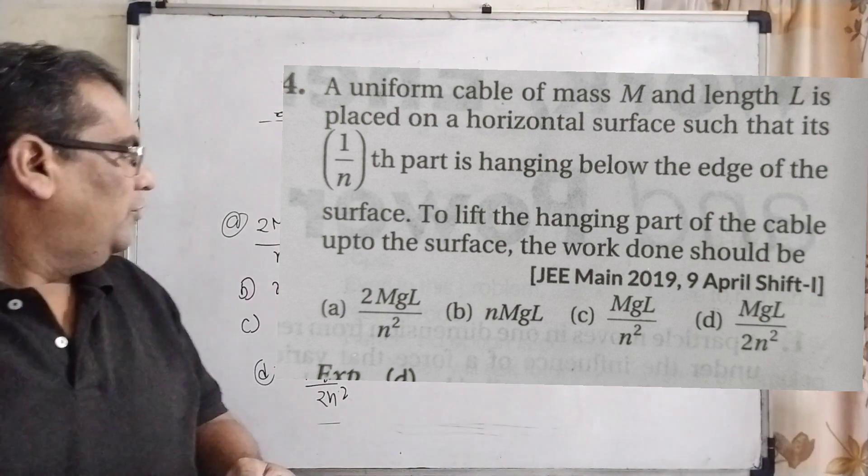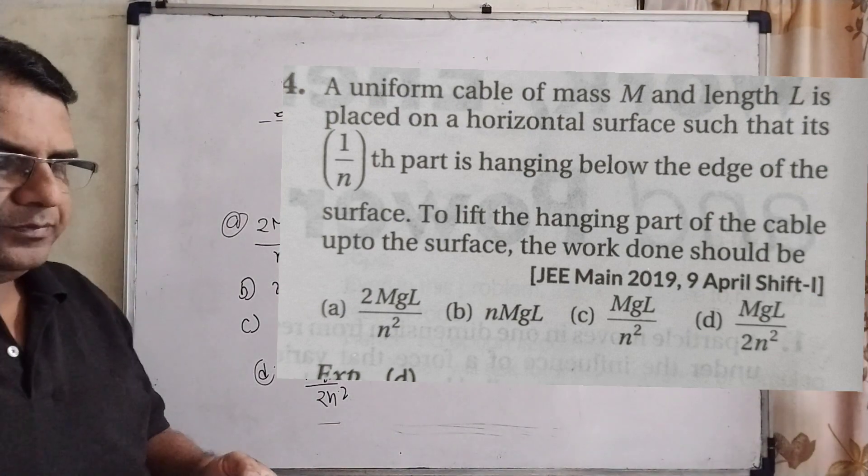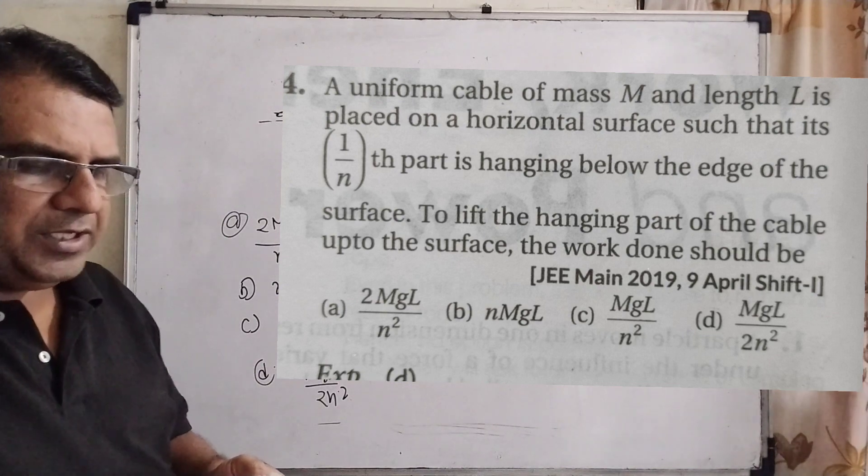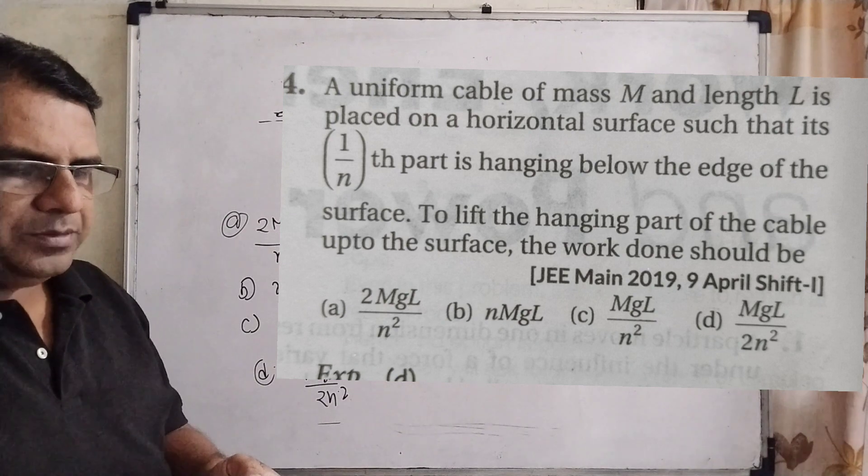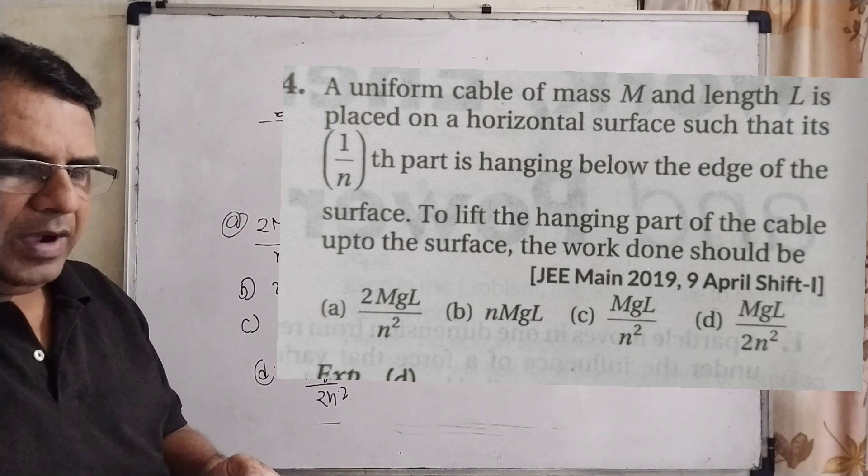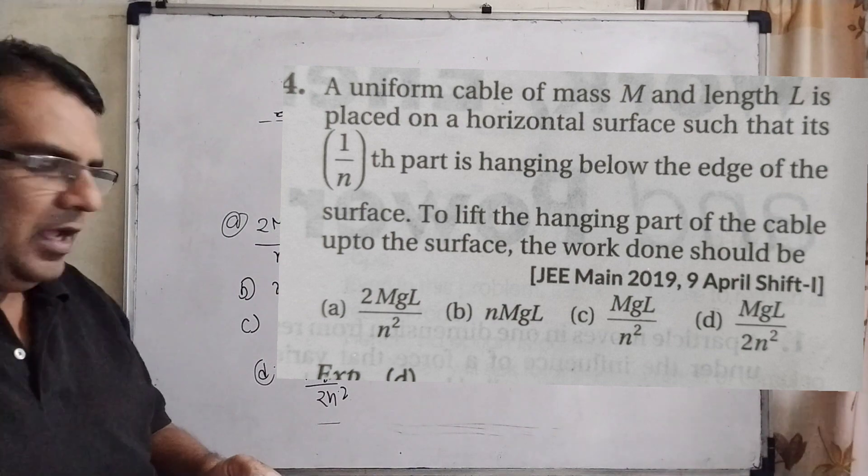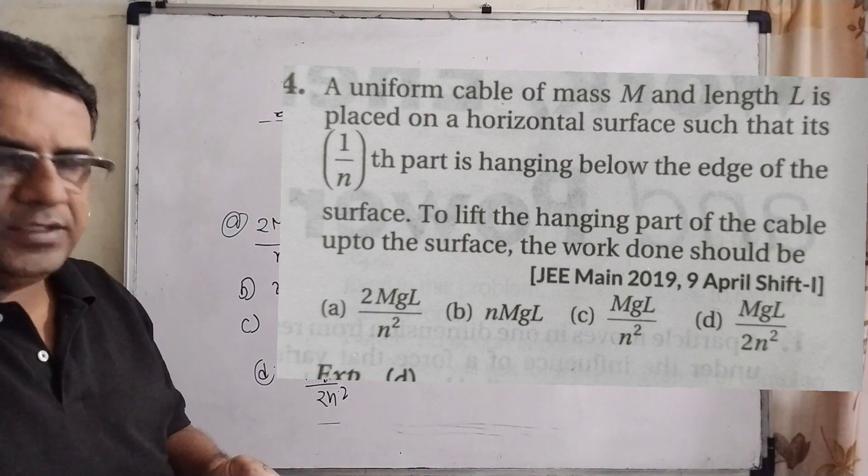We have given four options. Option A is 2MgL by n square, option B is nMgL, option C is MgL by n square, and last option D is MgL by 2n square.